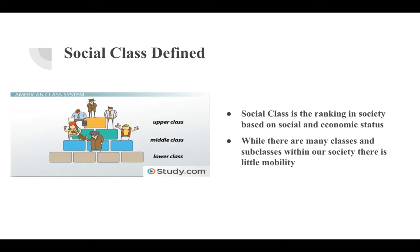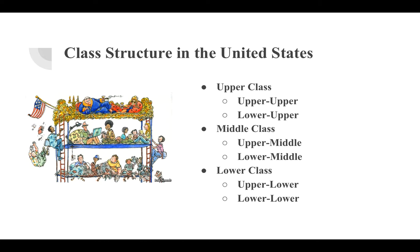As defined, social class is one's ranking in society based upon both their social and economic standing. Although difficult to determine, the best measure for one's social class is income. Despite the various classes and subclasses within our society, class mobility is very difficult to achieve. Marketers use this desire to move up the social ladder through their strategies to reach their target consumers.